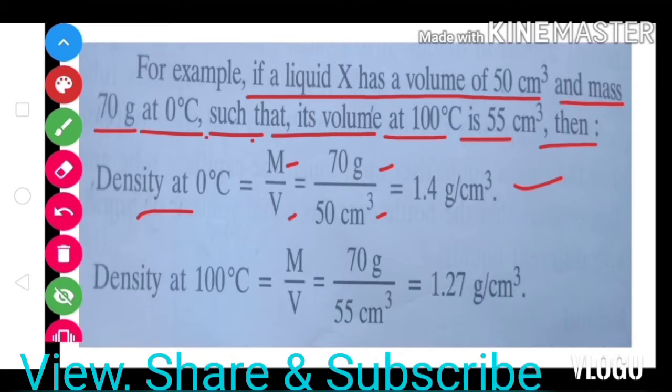Suppose the temperature is raised from 0°C to 100°C. Then the density at 100°C equals mass per unit volume. The mass is the same, constant - 70 grams - divided by volume 55 cm³. So the answer is 1.27 grams per cm³.